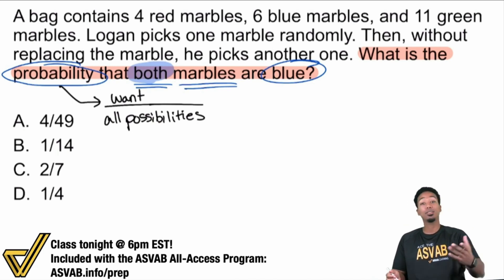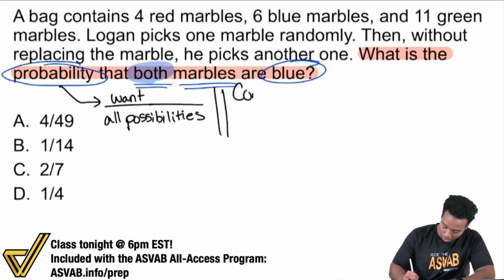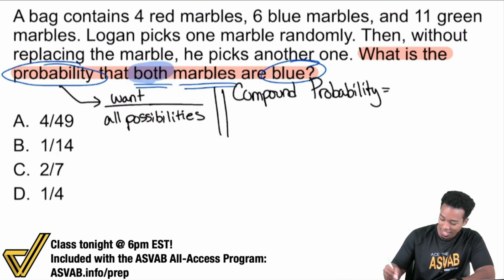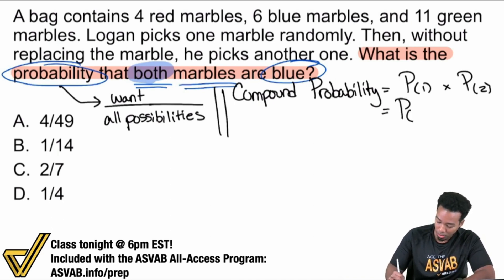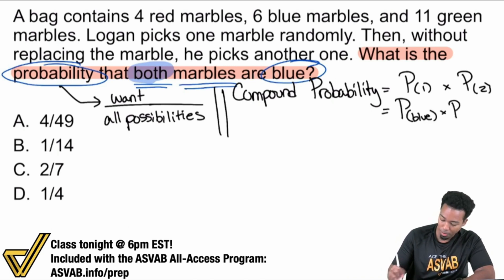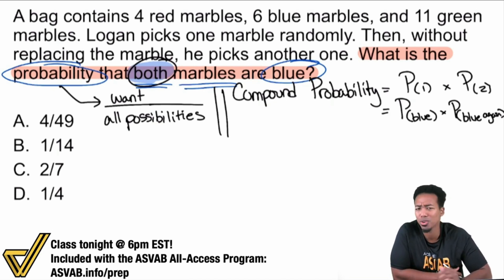So how do we compute that? It's super straightforward and super simple. The way that you calculate compound probability is this: you take the probability of the first event happening and you multiply it by the probability of the second event happening. That's it — compound probability, just multiply the probabilities. In this case, we want the probability of the first selection being blue, and then the probability of blue again. So now we just need to gather the information, put the right numbers in the right places, and we're good.